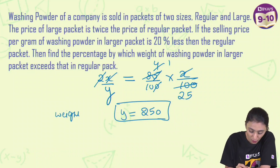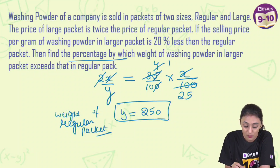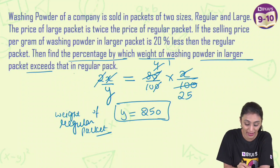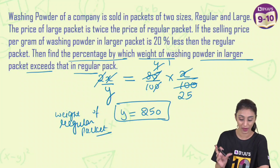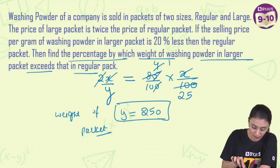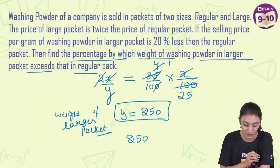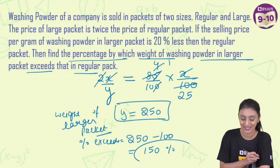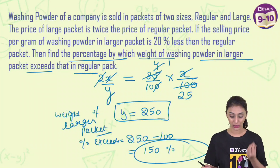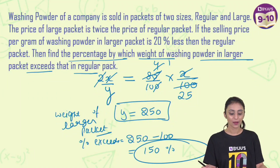This y is the weight of the larger packet, which is 250 grams, while the regular one is 100 grams. The question asks for the percentage by which the weight of the larger packet exceeds the regular one. That's 150 percent — the weight of powder in the larger packet exceeds the regular one by 150 percent. This question looked tricky in the beginning, but if you do the literal translation, it becomes straightforward.